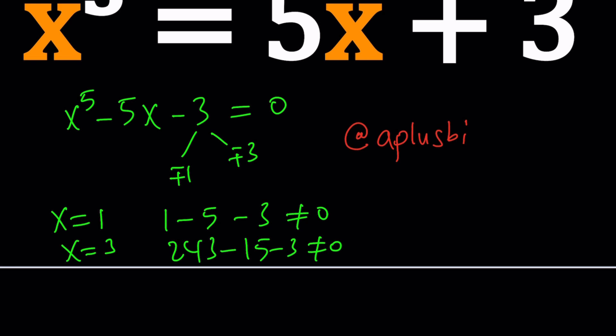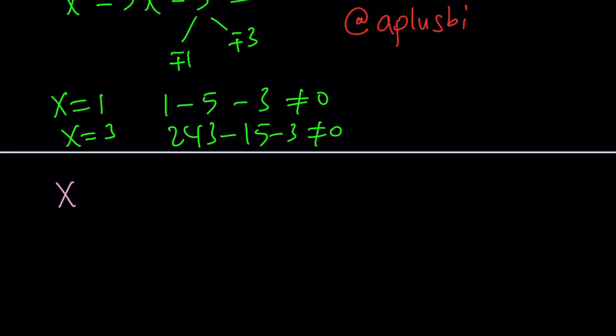You know what it's called? It's called method of undetermined coefficients. In other words, factoring. So how do we factor a quintic? Good question.